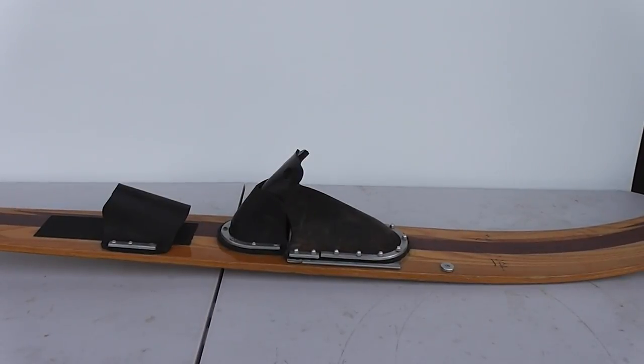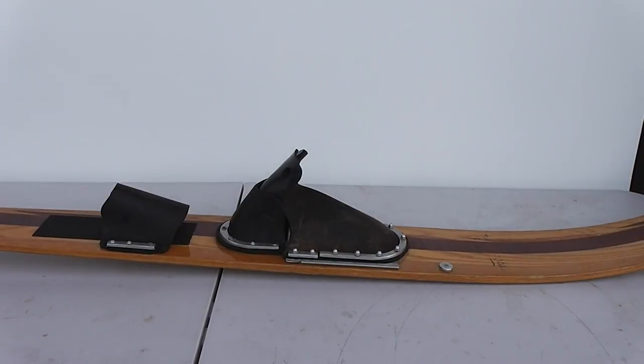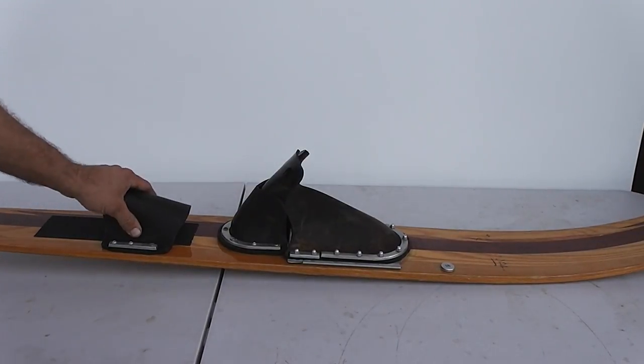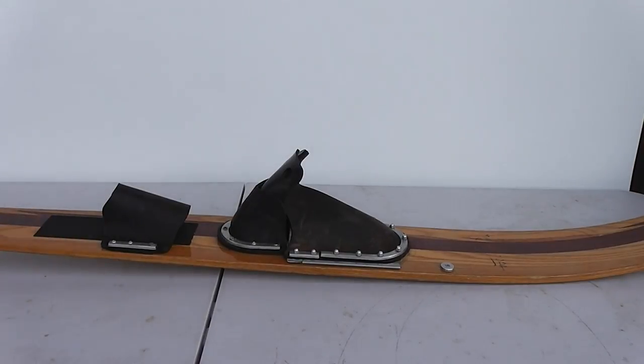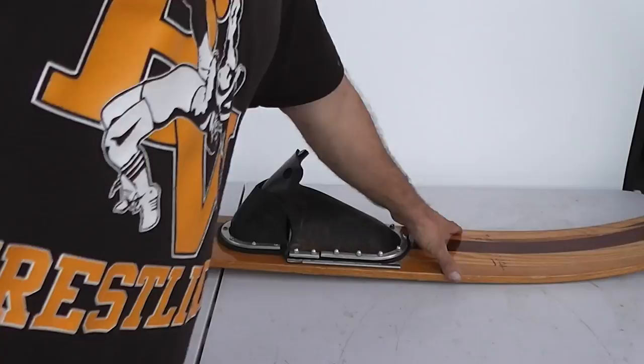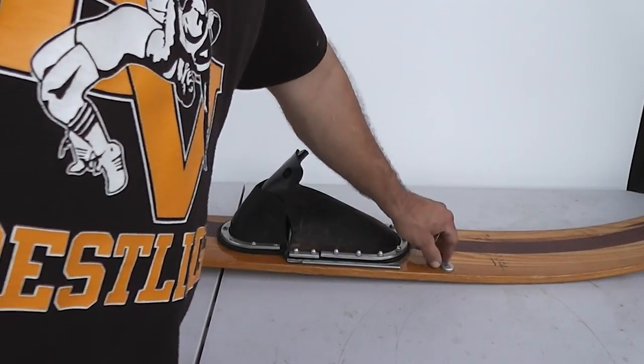This is the Maharaja water ski. It's 68 inches long. It definitely has some age and shows some of its age. It's about 6 inches wide at the widest point, which would be about there. There's actually a repair.